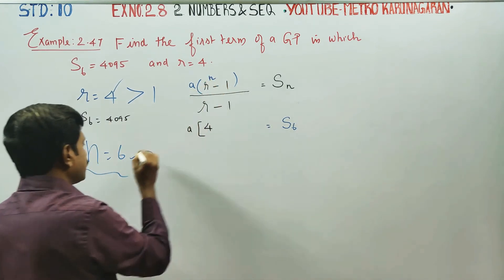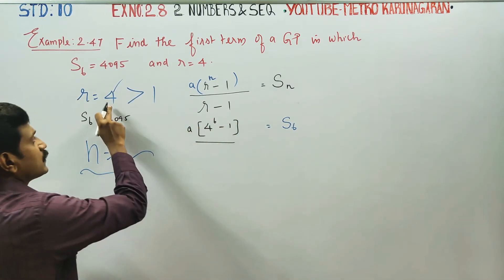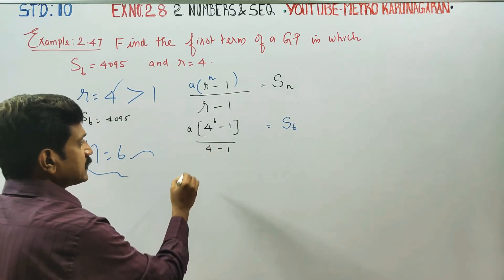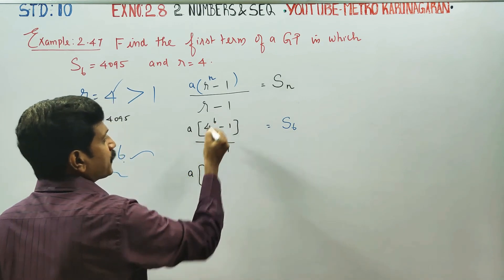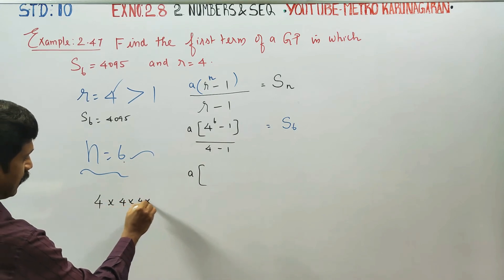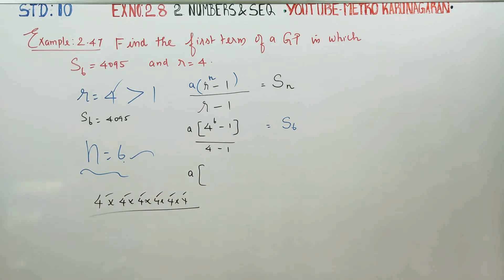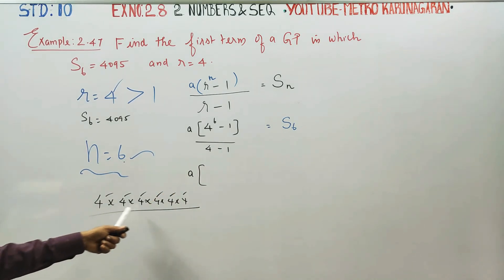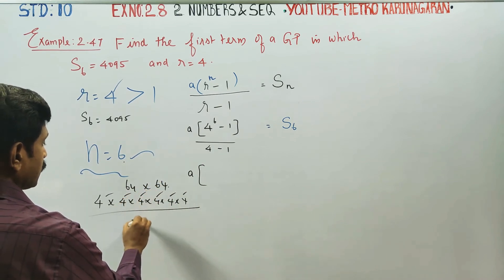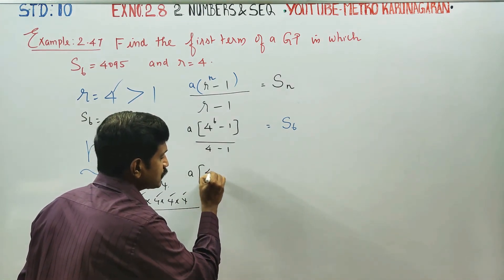N is 6 and R is 4. We substitute: 4 to the power 6. We count: 1, 2, 3, 4, 6, 6. Then we compute 4 to the 6th, which gives 4096. Now we have 4096.